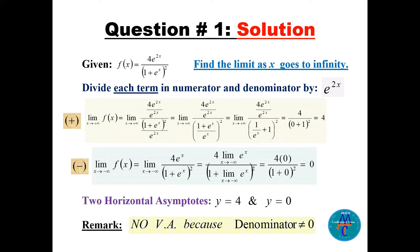We also try the limit as x goes to minus infinity. For the first limit, we divide the numerator and denominator by e^(2x). Up and down we cancel, getting 4 on top, and on the bottom we have (1 + e^x / e^x)^2, which simplifies to (1/e^x + 1)^2, giving us 4 over that expression.